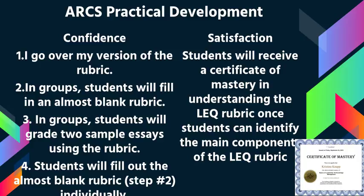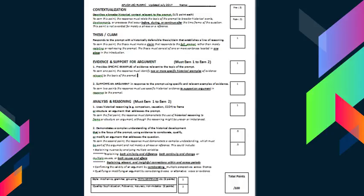Individually, students fill out the same blank rubric from step two. Once they raise their hand and demonstrate understanding, we move to Satisfaction: I would give them a certificate of mastery of understanding the long essay question rubric, proving they understand all six components. I would also add some blanks to the rubric for the Confidence part of the ARCS model.